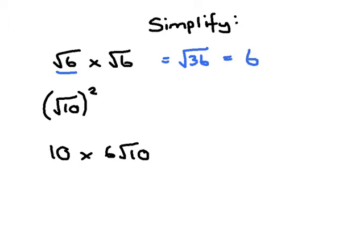The next one, we don't really even need to write it out fully. If you've got the square root here inside the brackets, then I'm going to square that. They're the opposite to each other. They're just going to cancel out. They're just going to leave me with 10.